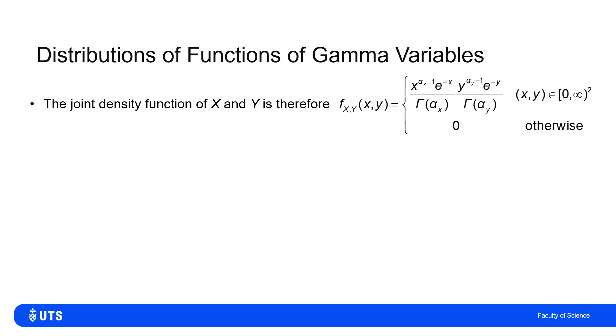So joint density, as I say, isn't difficult to work out because it's just writing down two gamma densities multiplied together.